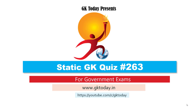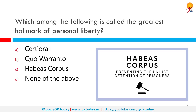Which among the following is called the greatest hallmark of personal liberty? The correct answer is Habeas Corpus. Habeas Corpus is a recourse in law through which a person can report an unlawful detention or imprisonment to a court and request that the court order the custodian of the person — usually a prison official — to bring the prisoner to court to determine whether the detention is lawful. It prevents citizens from getting arrested randomly without due procedure.